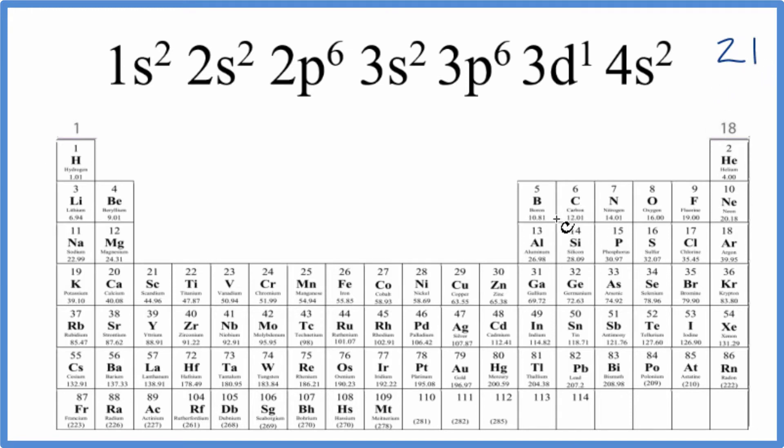When we look at the periodic table, the number above the elements, these numbers right here, these are the atomic numbers. And since all of the elements on the periodic table are neutral, they don't have a plus or minus after them, the number of protons, the atomic number, that'll equal the number of electrons.